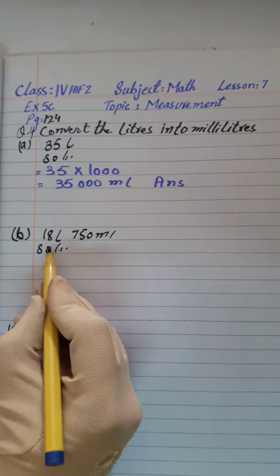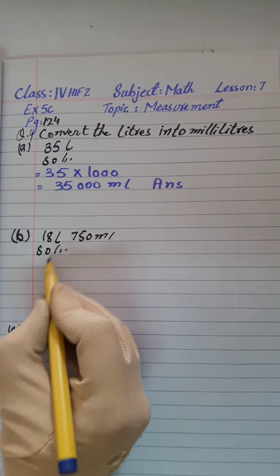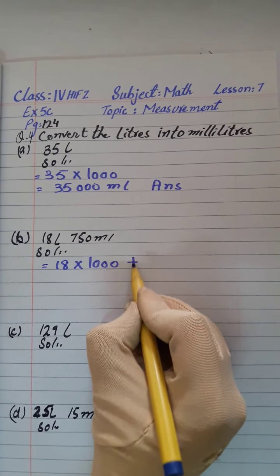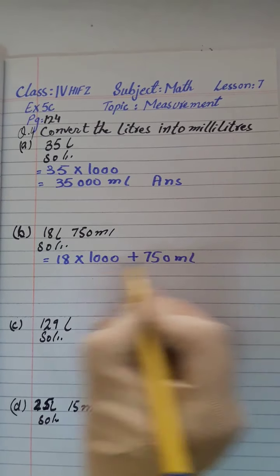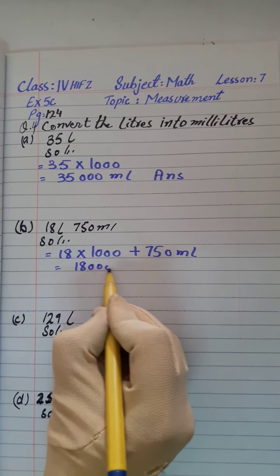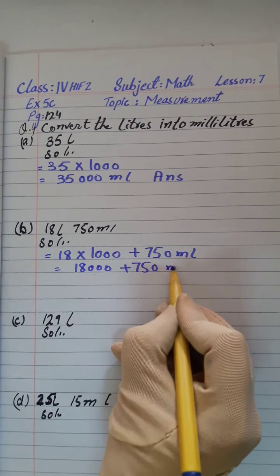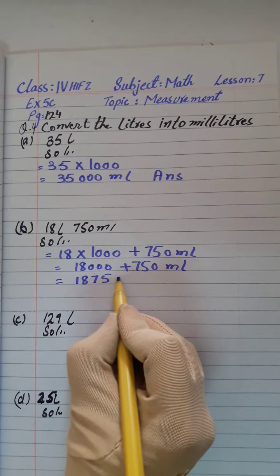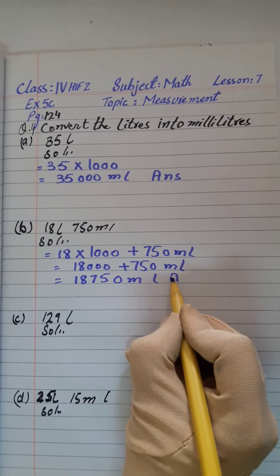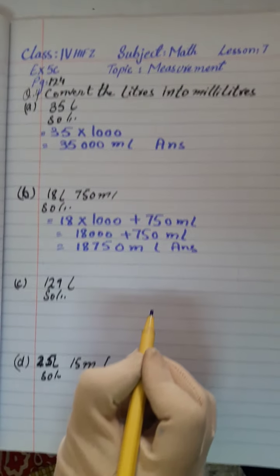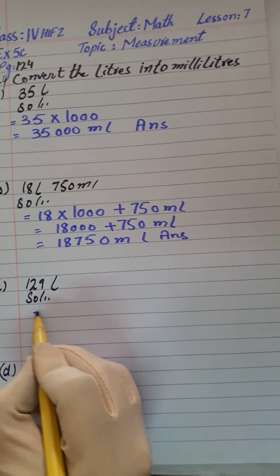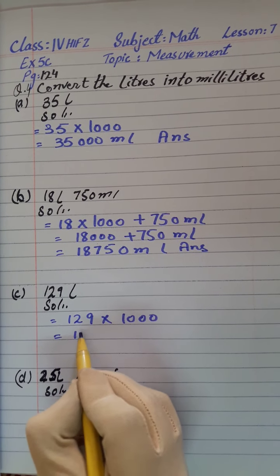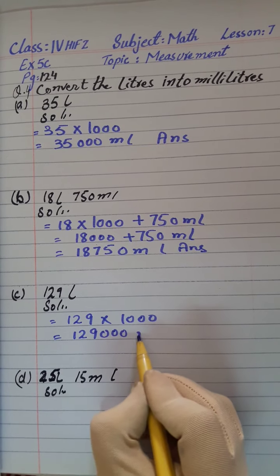Part B: 18 litres 750 millilitres. 18 litres multiplied by 1000 gives 18,000 millilitres, then plus 750 millilitres gives 18,750 millilitres. Part C: 129 litres. Multiply by 1000 to get 129,000 millilitres.